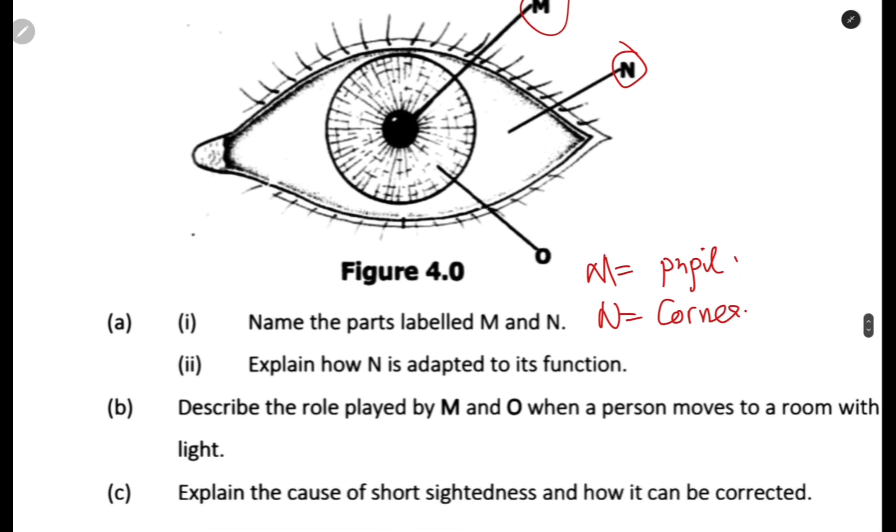Explain how N is adapted to its function. Now, N is the cornea. Now, how is it adapted to its function? So it is transparent for easy refraction of light, for easy refraction of light.